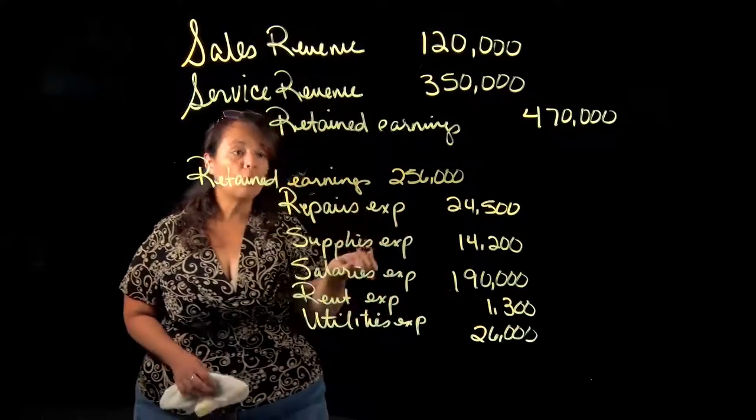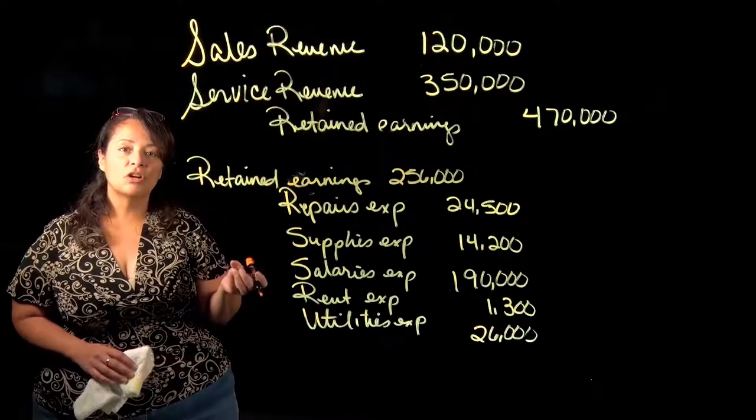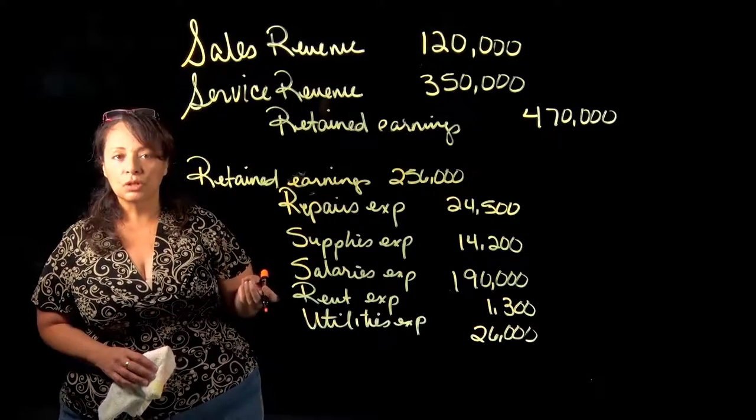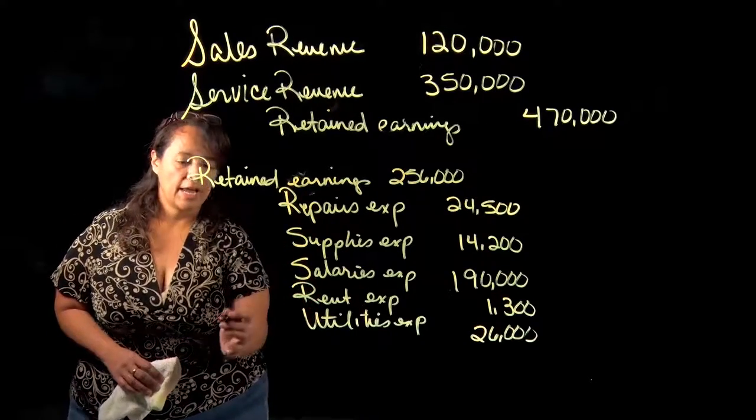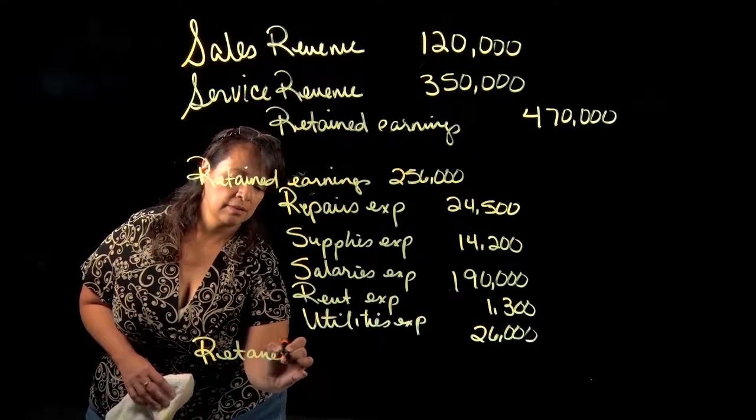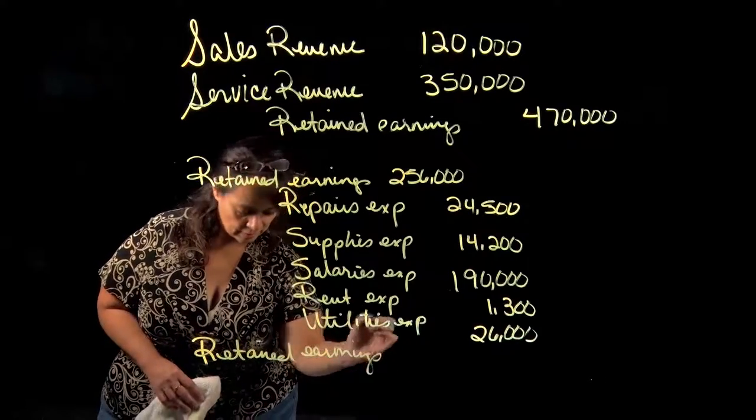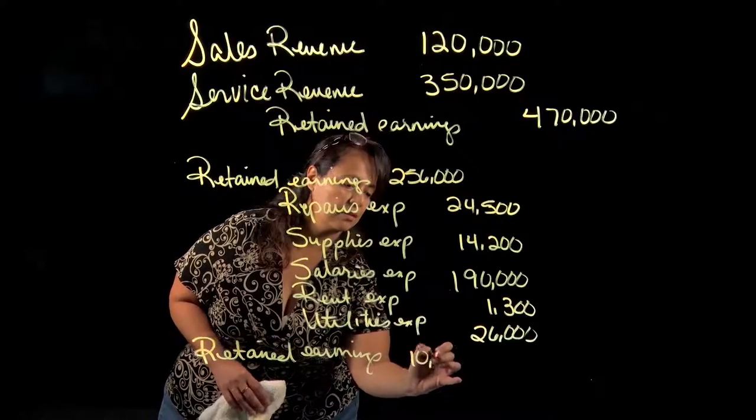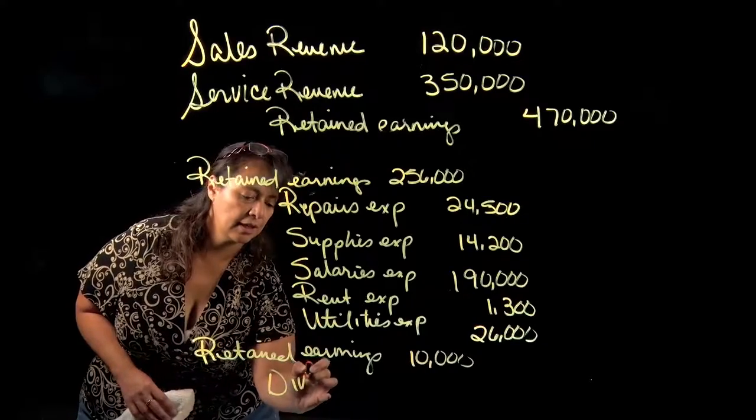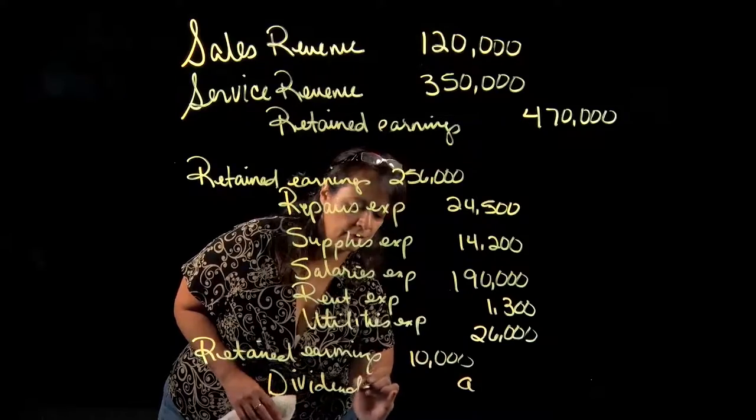All right, we're almost done. Only one more journal entry left to do, and that is to close our dividends account. Our dividends account has a normal debit balance, so in order to close it we're going to credit it. Our debit is going to be to retained earnings for $10,000, and our credit is going to be to our dividend account.